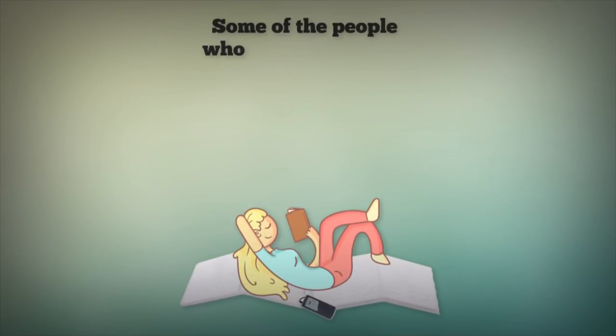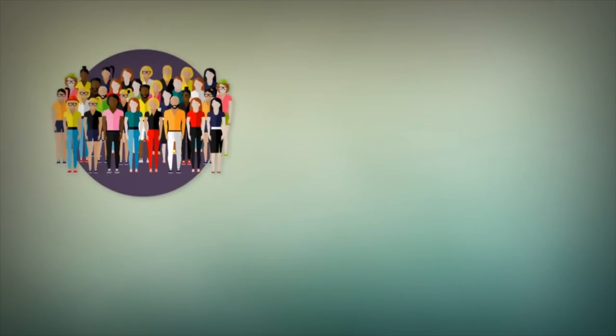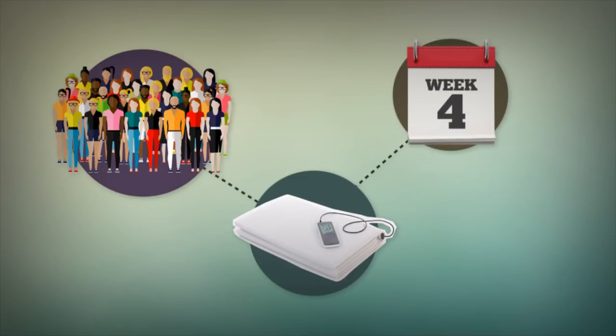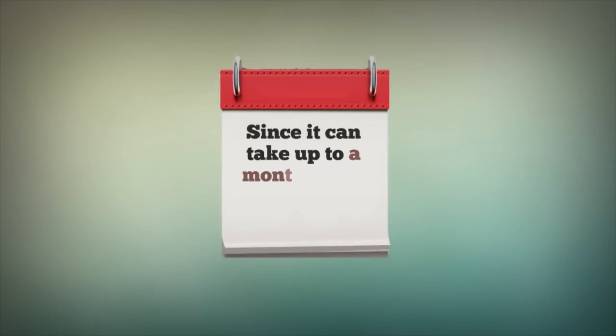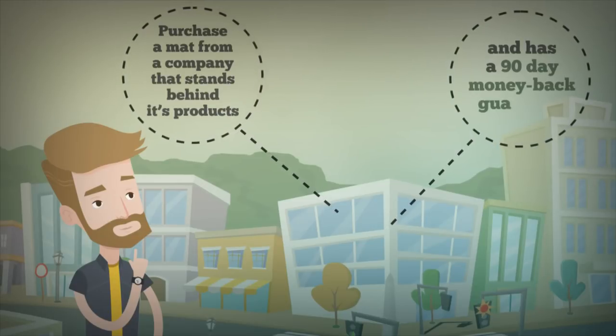Some of the people who use a PEMF mat don't see results until they've used the mat for at least a week. Many folks don't see results until they've used the mat for three to four weeks, and sometimes it takes four to six weeks to see results. Since it can take up to a month and a half to see results, it's important to purchase a mat from a company that stands behind its products and has a 90-day money-back guarantee.